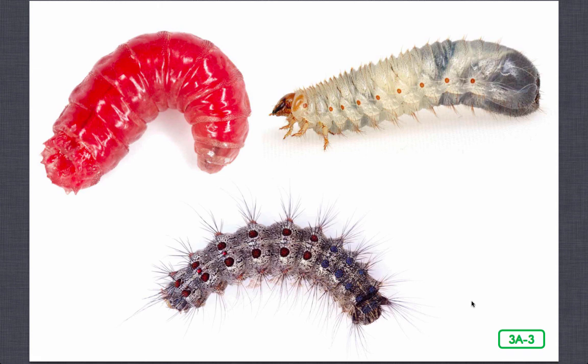Larvae feed and grow as quickly as they can. They also molt or shed their hard exoskeletons many times as they grow, because the exoskeletons don't grow with them. In this way, insect larvae grow larger each time they molt until they are ready to change into adult insects.